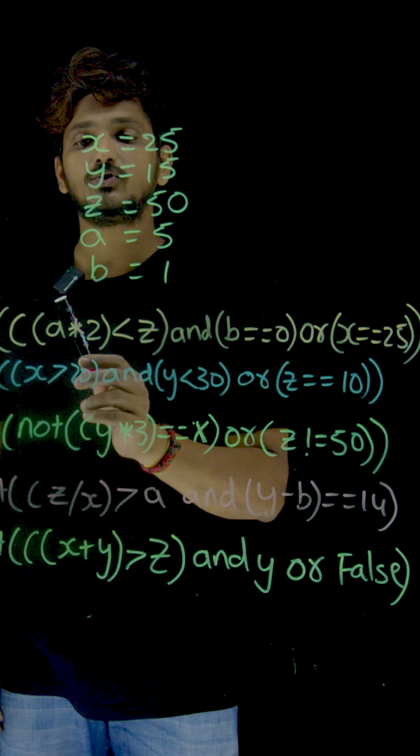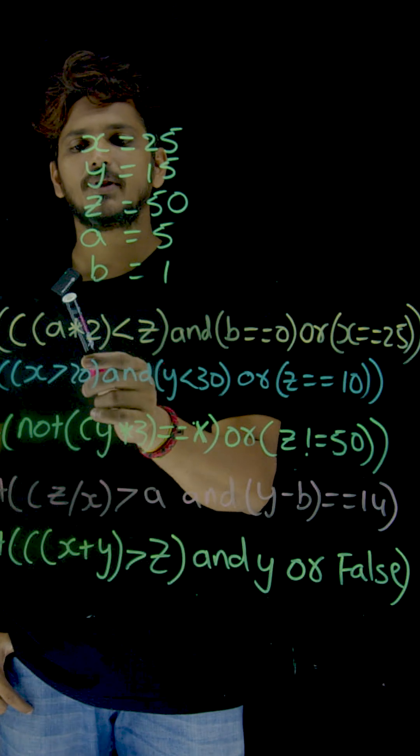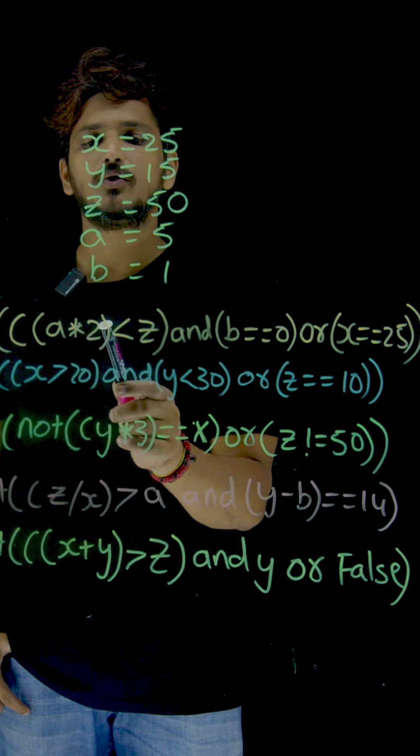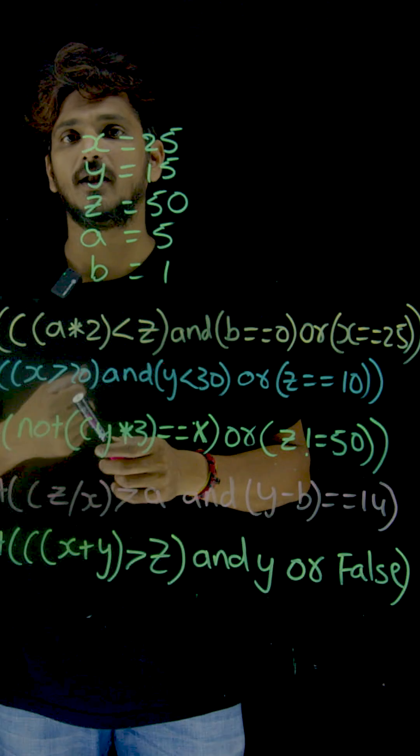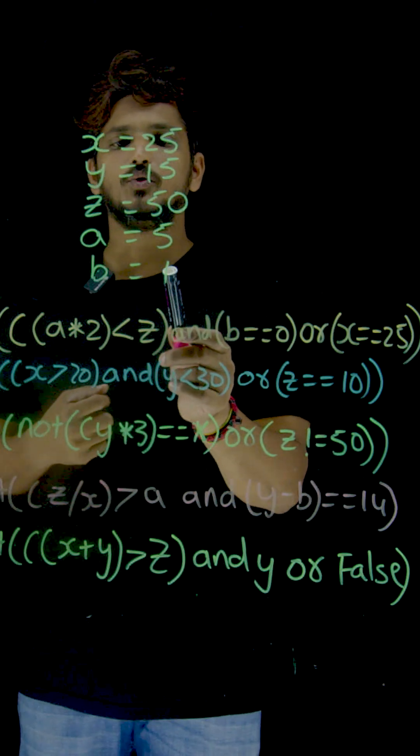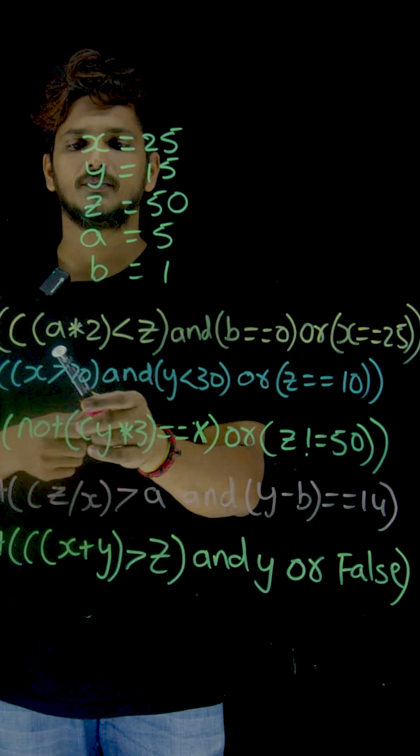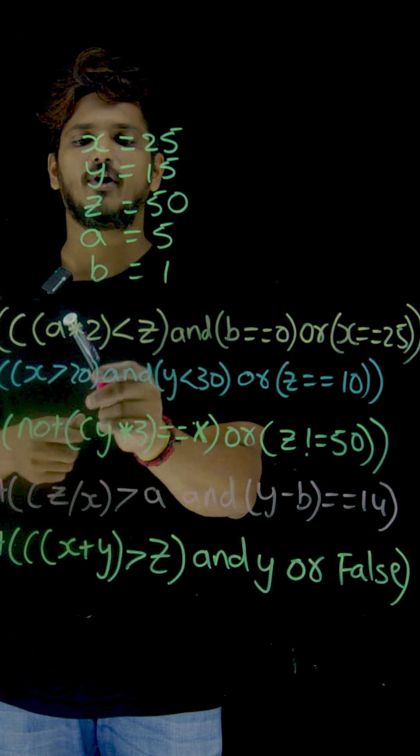So coming to the first one: open brackets, open bracket, open bracket, a multiplied by 2, closed bracket. So first this operation is going to be done. A multiplied by 2. A is 1... a is 5. 5 times 2 is 10.